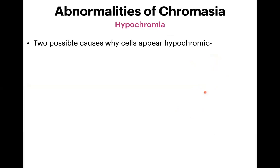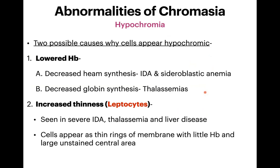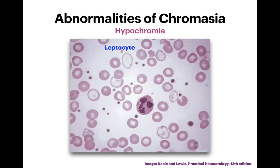There are two possible reasons why cells appear hypochromic. First, hemoglobin is actually reduced — either heme synthesis is decreased (as in iron deficiency anemia and sideroblastic anemia) or globin synthesis is decreased (as in thalassemias). Second, the RBC may be thinner than normal. These cells are called leptocytes, seen in severe iron deficiency anemia, thalassemia, and liver diseases. Leptocytes appear as thin rings of membrane with little hemoglobin and a large unstained central area.